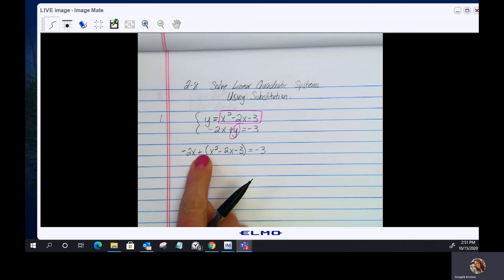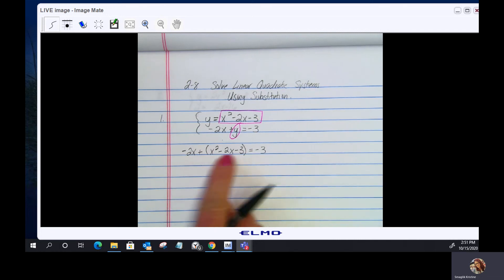OK, so now notice I have a plus, this doesn't really matter, the parentheses, there's no negative to distribute. If this would be a minus, then I'd really have to worry and make sure I distribute that negative. So here we go. Let's combine like terms.